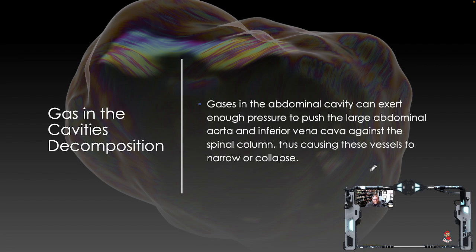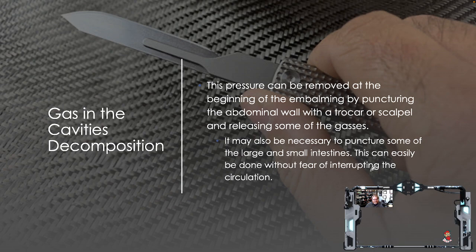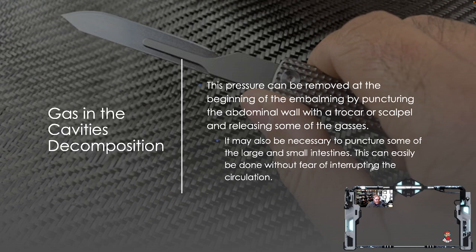Gases in the abdominal cavity can exert enough pressure to push the large abdominal aorta and inferior vena cava against the spinal column, causing the vessels to narrow or collapse. This is considered an extravascular pressure — it's within the body but not within the actual vasculature. The pressure can be removed at the beginning of embalming by puncturing the abdominal wall with a trocar or scalpel and releasing some of the gases. It may also be necessary to puncture some of the large and small intestines. The issue comes in if you go in too deep and nick something like the vena cava or the aorta.